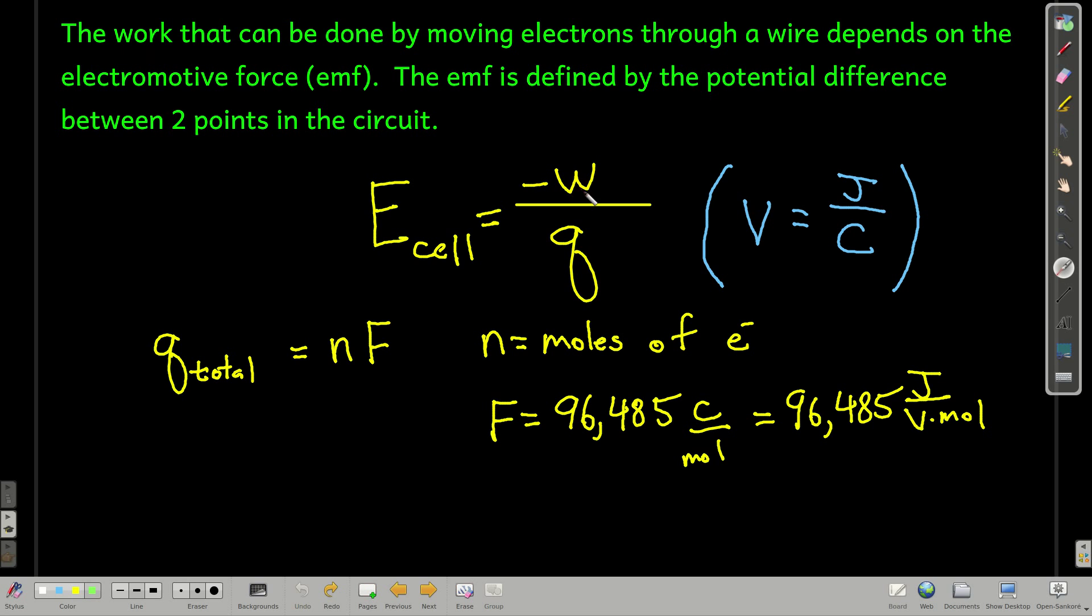Now, because if the cell does work on the surroundings, then W is going to be negative for it. But we know for a cell to be spontaneous, it has to have a positive cell potential. So we have a little negative sign here to make sure the signs work out.